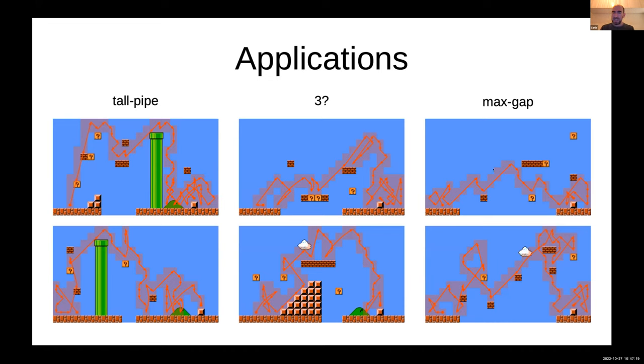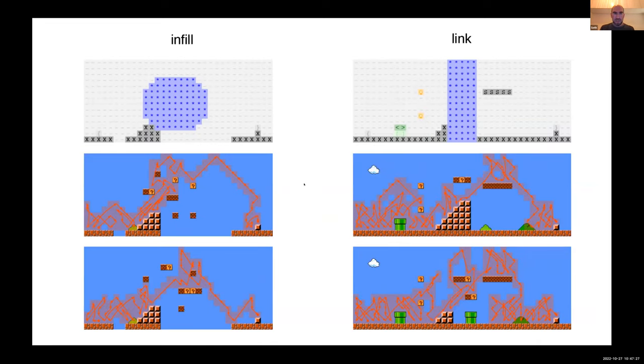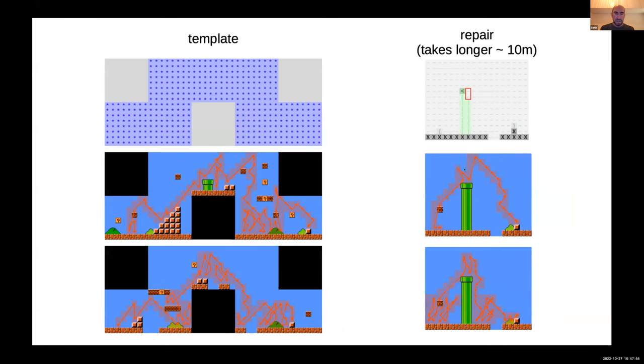You can use soft constraints to do maximization and minimization. This one was asking it to maximize the number of gap tiles along the bottom. You can also do things like infilling basically. You can put constraints on some of the tiles and no constraints on some of the other tiles and run the solver and it will fill things in, or you can link together some generated segments of the level using a similar process.